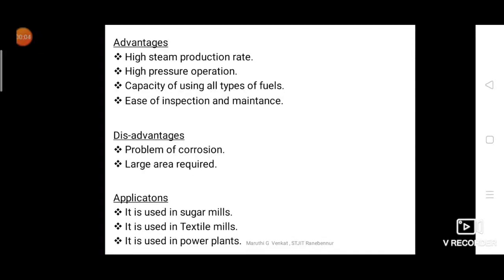The advantages of the Babcock and Wilcox boiler are: first, a high steam production rate of 40,000 kg per hour; second, high pressure operation up to 40 bar; third, it can use all types of fuel to generate hot flue gases; and fourth, inspection and maintenance are very easy compared to the Lancashire boiler.